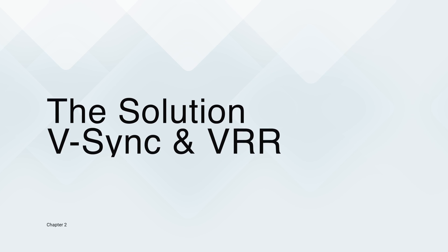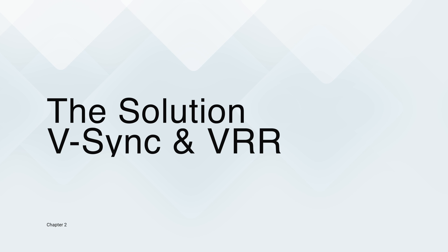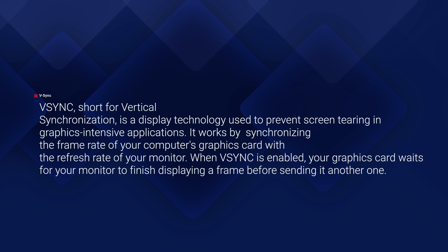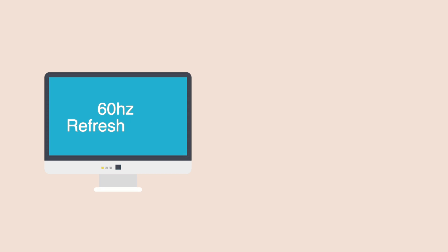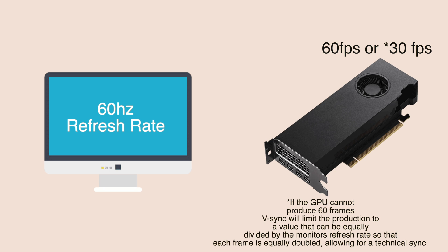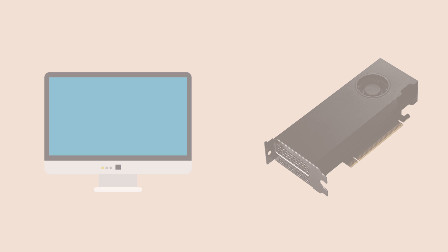So if both these devices have different frame rates or refresh rates, how do we fix the problem? An old-school solution that's existed for some time is vertical synchronization, more commonly known as vSync. Basically, vSync artificially limits the frame rates your GPU produces to match that of your external monitor. So if your monitor has a 60Hz refresh rate, your GPU will produce 60 frames to send over. This does effectively end screen tearing and stuttering because everything is in sync again — but the problem with this solution is something called input lag.